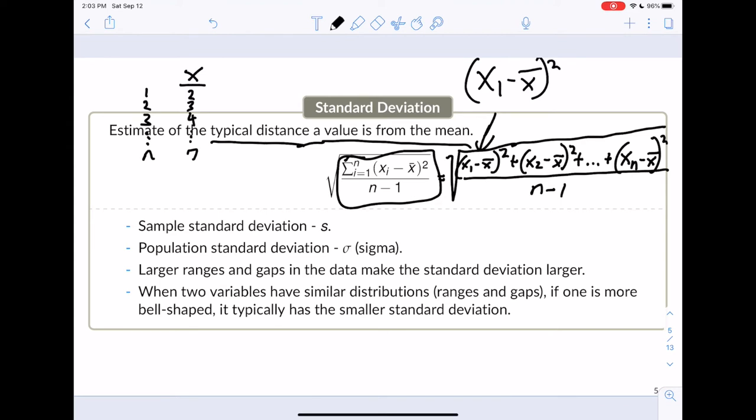Now, the reason we care about that square root is that we want to go back to our original unit. So if we take the square root, we'll go back to the unit. So if you can imagine that maybe x is measured in inches, so it's 2 inches, 3 inches, 4 inches, 7 inches, and maybe that's somebody's hand.